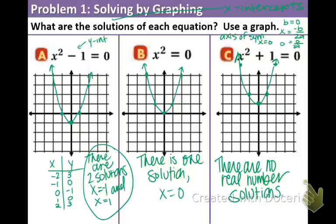So we're going to say there are no real number solutions. There may be solutions, but we don't have to worry about that. You'll learn more about imaginary solutions or complex solutions in Algebra 2. So there are three different possibilities: two solutions, one solution, or none.